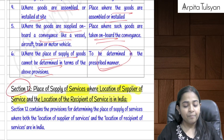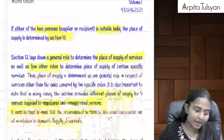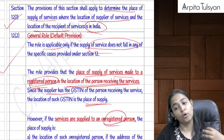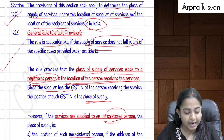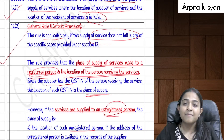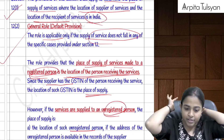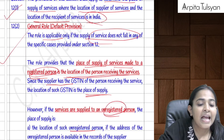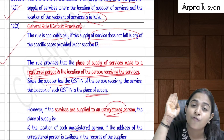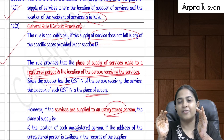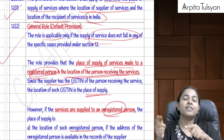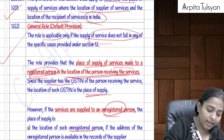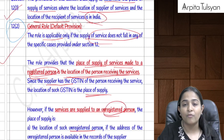Within Section 12, specific types of services are covered under Sections 12(3) to 12(14). For services not falling under any specific provision, Section 12(2) applies as the default rule. If the service is provided to a registered person, the place of supply is the location of the recipient.